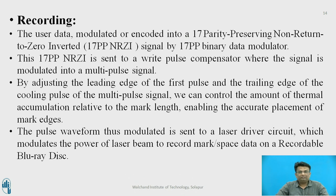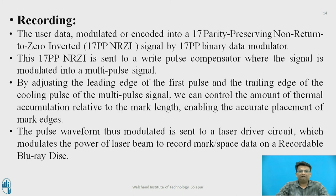Recording: The user data is modulated or encoded into a 17PP parity-preserving non-return-to-zero inverted (17PP NRZI) signal by the 17PP binary data modulator. This signal is sent to the write pulse compensator where it is modulated into a multipulse signal. By adjusting the leading edge of the first pulse and the trailing edge of the cooling pulse, the amount of thermal accumulation relative to mark length is controlled, enabling accurate placement of the mark edge. The pulse waveform is sent to the laser driver, which modulates the laser beam power to record mark and space data on the recordable Blu-ray disc.